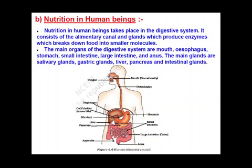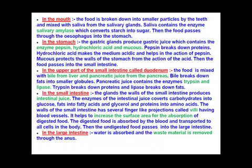The main glands that form an important part of the digestive system are the salivary glands present in our mouth, gastric glands present in our stomach, the liver, pancreas, and intestinal glands. Let us now study about them in detail and what happens at each stage of digestion.